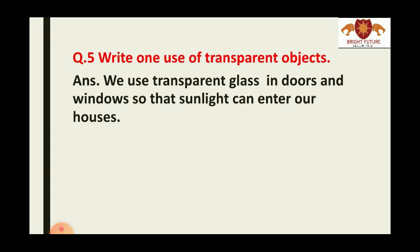Question number five: Write one use of transparent objects. Answer is: we use transparent glass in doors and windows so that sunlight can enter our houses. Transparent glass is used in doors and windows, and it allows sunlight to enter our homes.